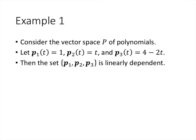Let's look at a couple of examples in other vector spaces that aren't Rn. One of the vector spaces we've talked about is the vector space of polynomials, where the vectors are polynomials. We can add two polynomials and get another polynomial, and we can multiply a polynomial by a scalar and get another polynomial. If we have the set containing the polynomial 1, the polynomial t, and the polynomial 4−2t, then this set is not linearly independent — in other words, it's linearly dependent.